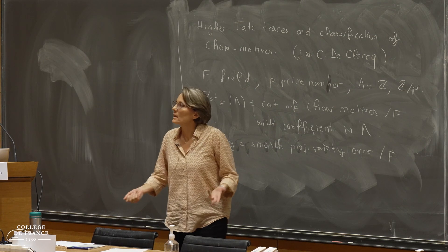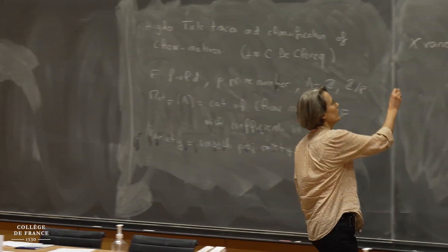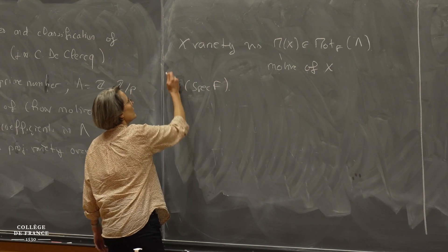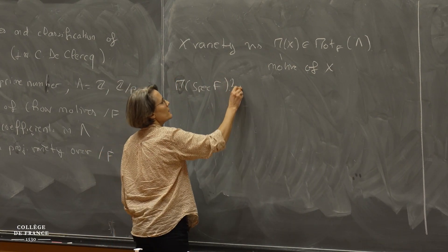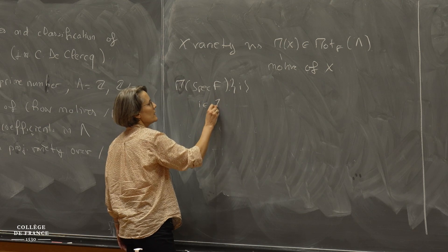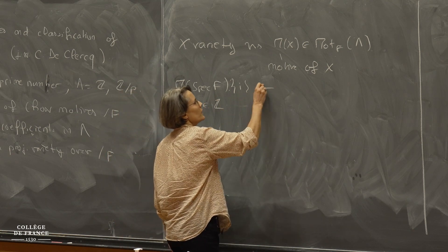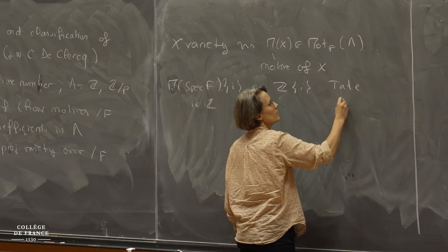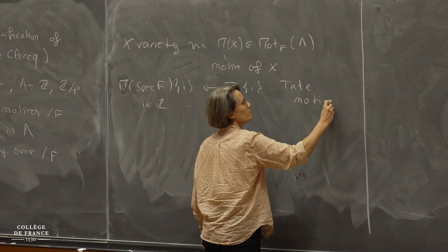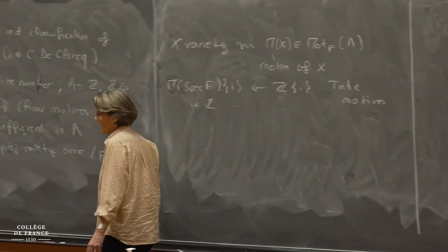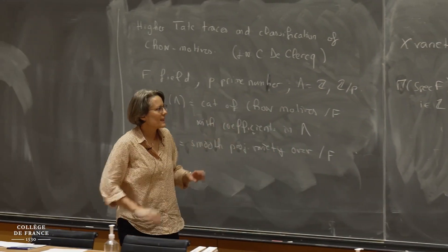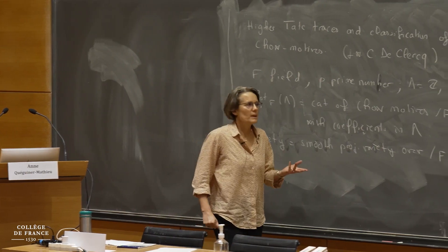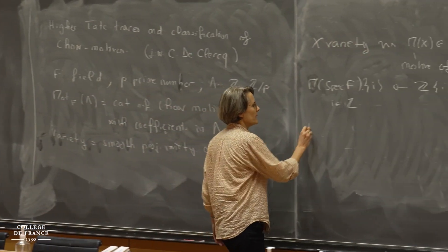The easiest object you can think of is the motive of a point. You can shift it by some integer i, and with our notation those are written Z(i) and are called Tate motifs. That's the setting I will use throughout my talk, and I would like to start with some examples of motivic decompositions.